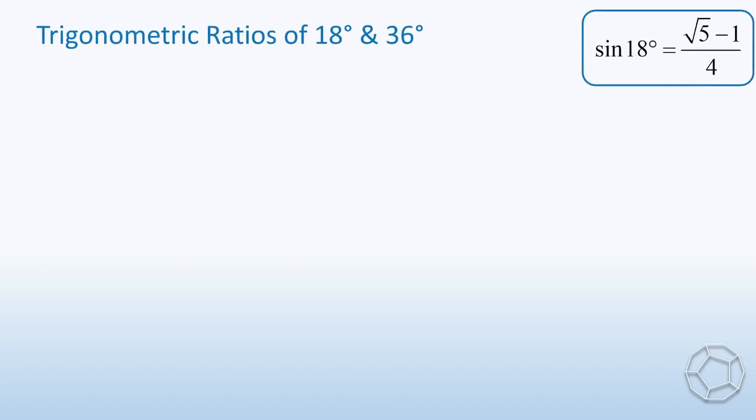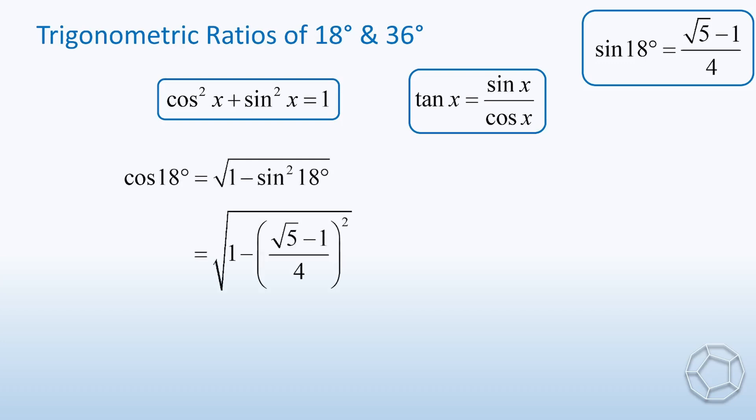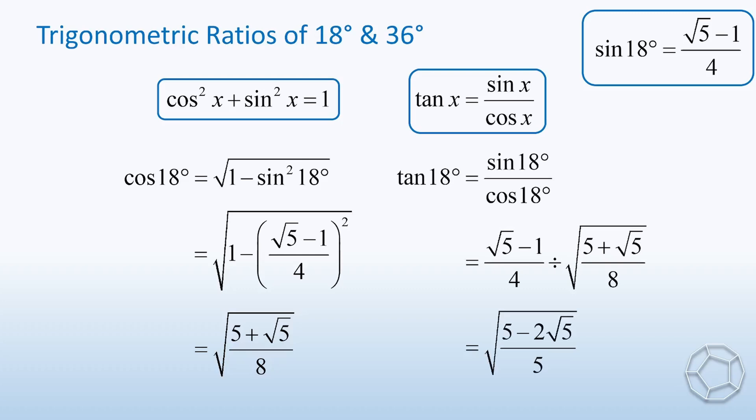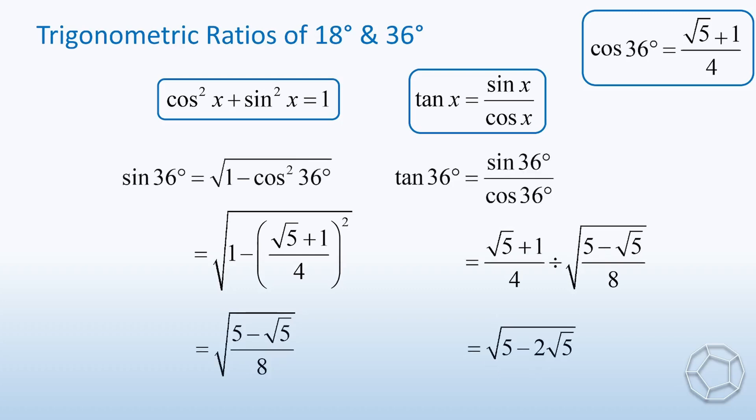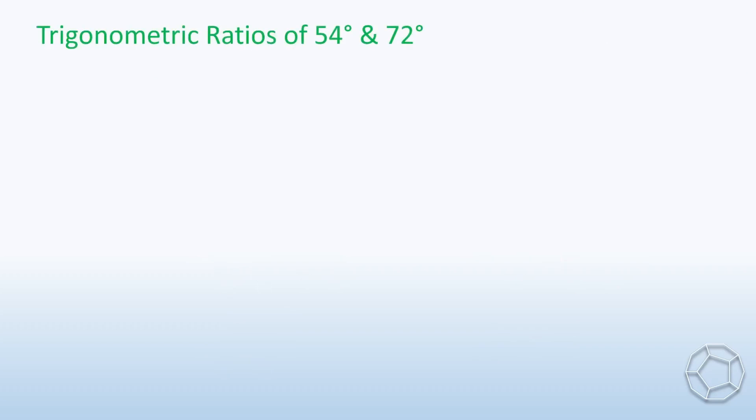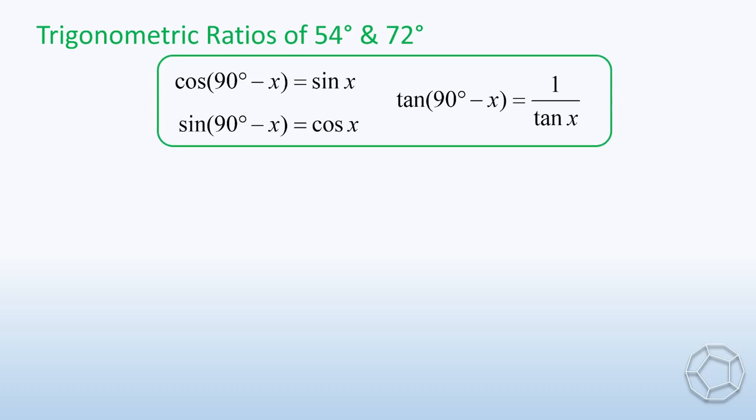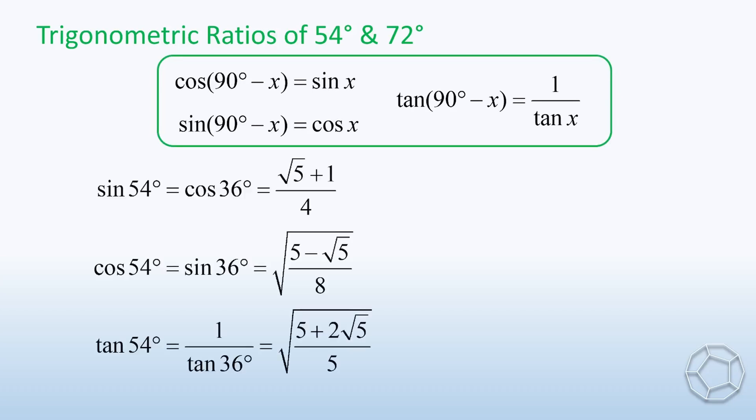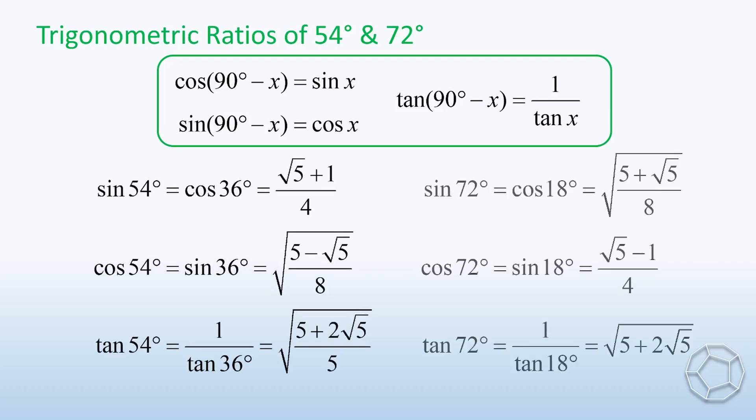For the rest of the trigonometric ratios, we can apply these two identities to obtain cosine 18 degrees and tangent 18 degrees. The method is the same for 36 degrees as well. Now, for 54 degrees and 72 degrees, we make use of another three identities about 90 degrees minus X. So 54 degrees is related to 36 degrees, and 72 degrees is related to 18 degrees.